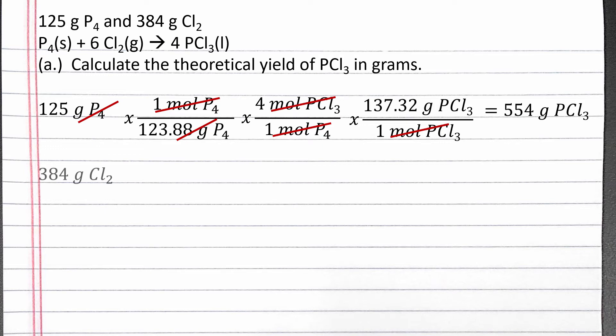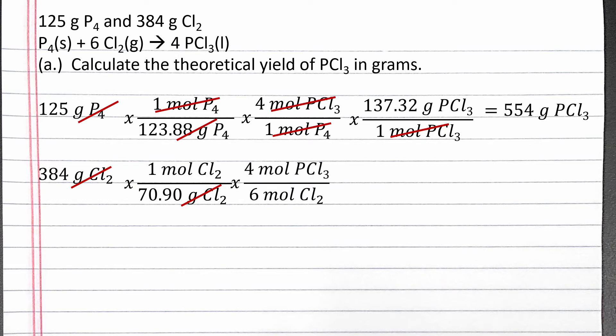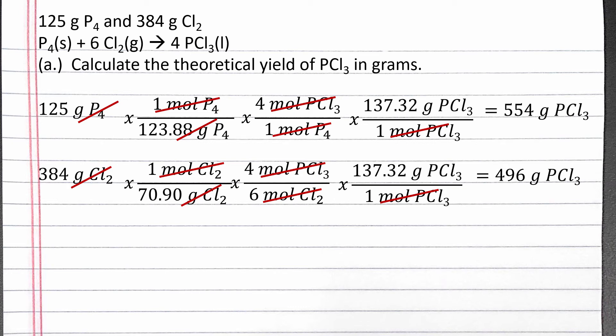Next we convert 384 grams chlorine gas to grams of PCl3, so we know which reactant produces less product. We use the molar mass of Cl2 to convert from grams Cl2 to moles Cl2. Then we use the coefficients in the balanced chemical equation to convert from moles Cl2 to moles PCl3. Then we use the molar mass of PCl3 to convert from moles PCl3 to grams PCl3. Completing the calculation, we should get 496 grams PCl3.